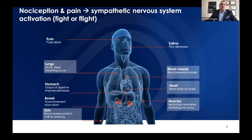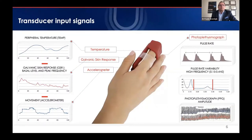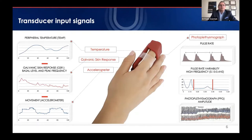Pain and nociception activate the sympathetic nervous system: pupils dilate, breathing and heart rate increase, blood vessels constrict, and sweating occurs. The NOL captures signals from several of these sympathetically activated organ systems — the peripheral vasculature, the heart, and the skin. The transducer looks like a bulky pulse oximeter. It measures the photoplethysmograph (PPG) — amplitude, pulse rate, and variability — galvanic skin response (skin conductance), temperature, and movement through an accelerometer. Temperature and movement do not contribute to the NOL score but help assess signal quality.